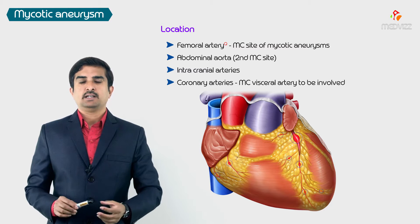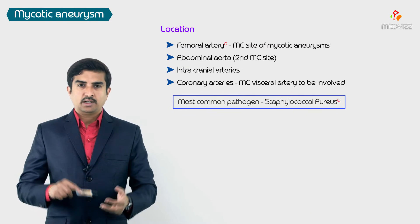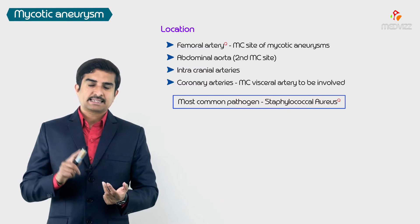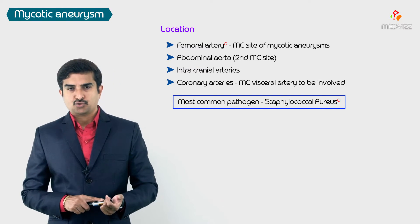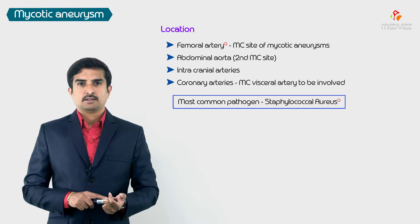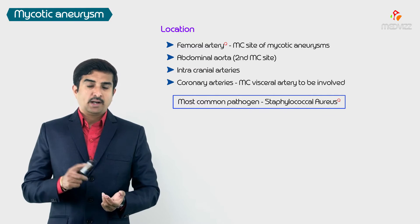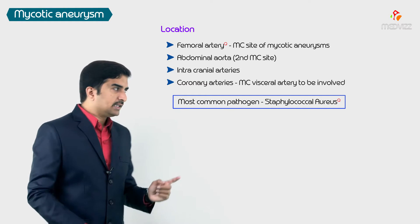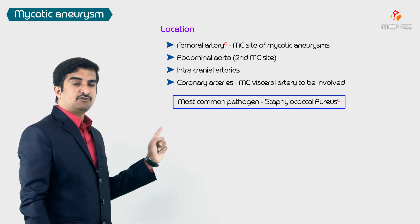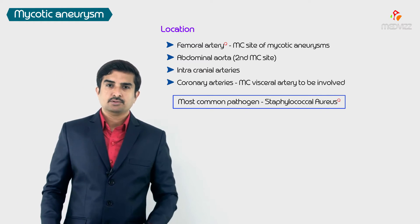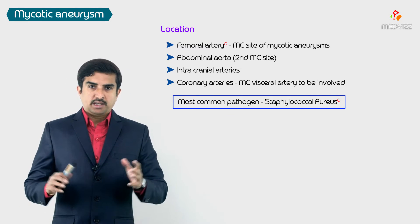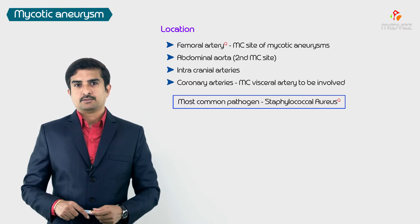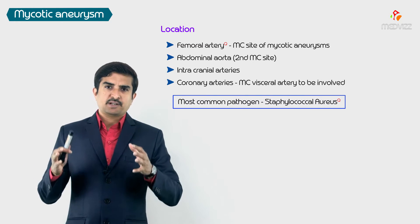To summarize the important MCQ points: the most common pathogen is Staphylococcus aureus; the most common site is the femoral artery; the second most common site is the abdominal aorta; and the most common visceral artery involved is the coronary artery. These are the key facts to remember related to mycotic aneurysms.